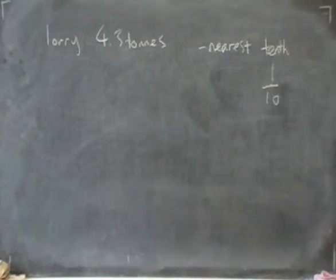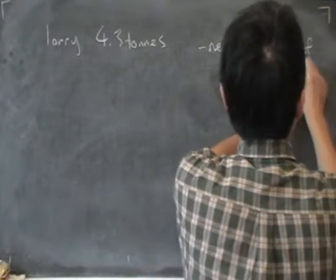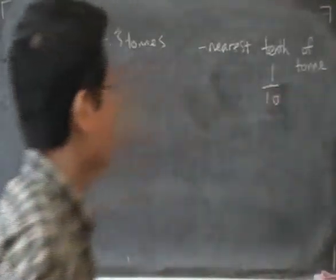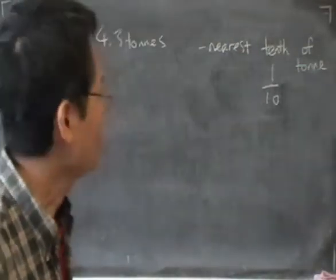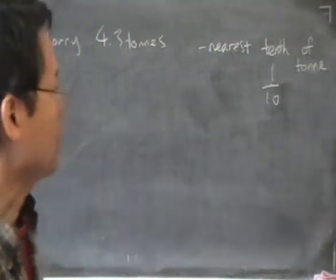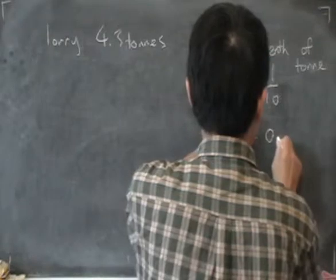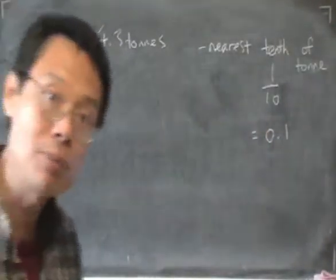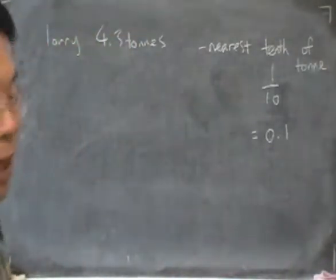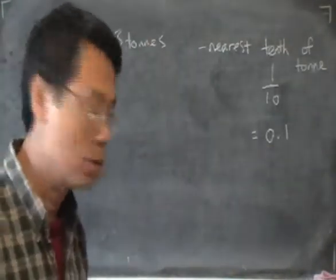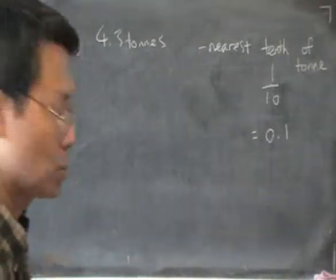To the nearest tenth — let me make this clearer — to the nearest tenth of a ton. So we know that it means one over ten of a ton. It becomes clearer if we think of one over ten as a decimal: zero point one. What this simply means is that the weight is given to one decimal place. So that means 4.3 tons is a number corrected to 0.1, i.e., one decimal place.